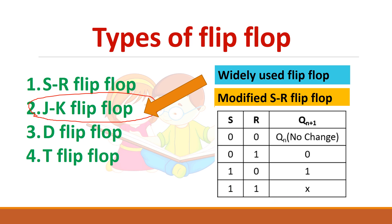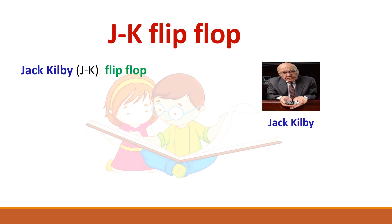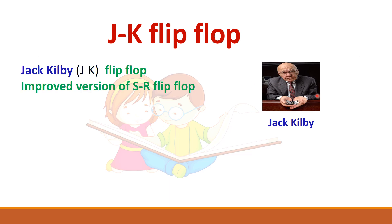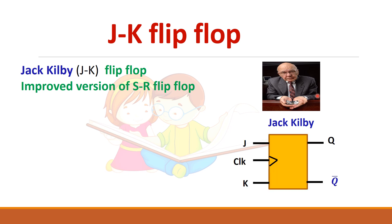But in JK flip-flop you can give J equal to K equal to 1. JK flip-flop got its name from Jack Kilby who invented this flip-flop. It is the improved version of SR flip-flop. JK flip-flop also has two inputs J and K — it is almost the same as SR flip-flop where J equals S and K equals R — and you have two outputs Q and Q bar.